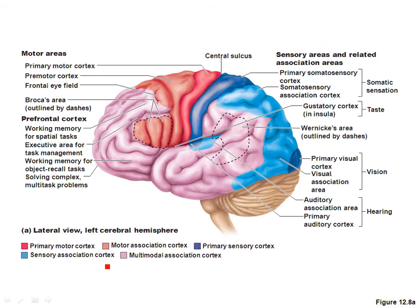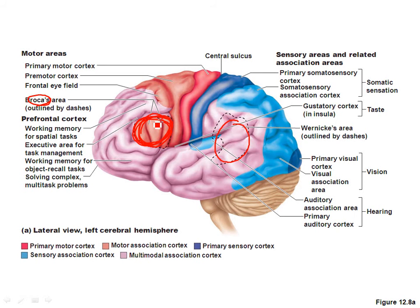Something interesting about the cerebral cortex is that it's divided into different areas responsible for different things. We have Broca's area and Wernicke's area. Back in the early days of anatomy and physiology, a man named Broca noticed that some of his patients had problems speaking. Upon their deaths, he did autopsies and found a lesion in the same particular part of the brain in patients who had the same ailment. What was found is that this part of the brain is associated with language production — so Broca's area has to do with language production.